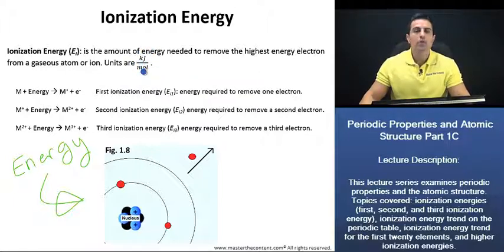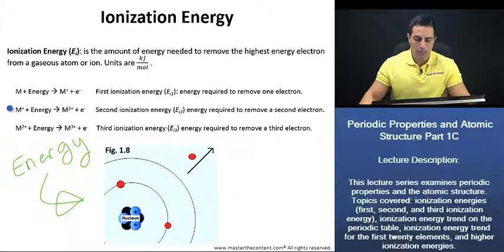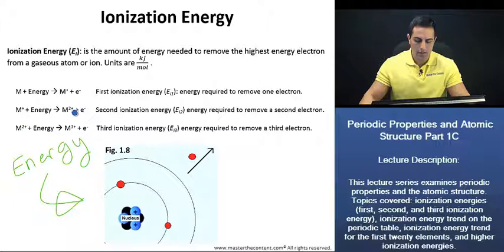More than one electron can be removed from an atom, and it will take place sequentially. We see that there's an initial amount of energy that was required, and then we're left with a monovalent positive ion. Again, with energy, we can remove another electron, and then we're left with a dipositive ion. And then with energy again, we see that with this reaction, an electron is removed again.